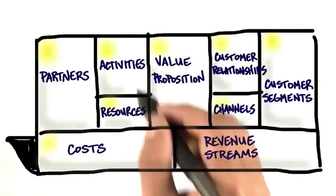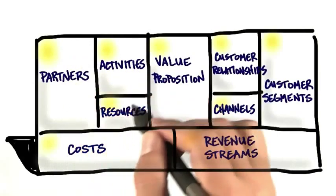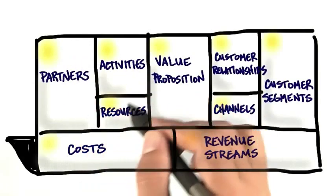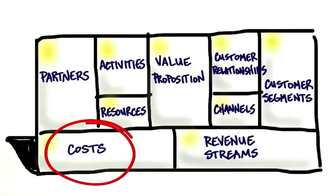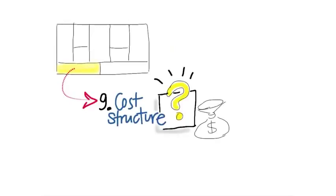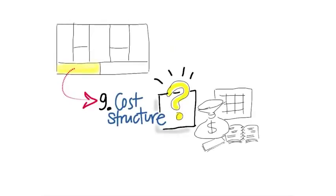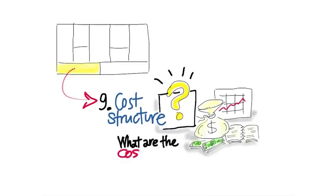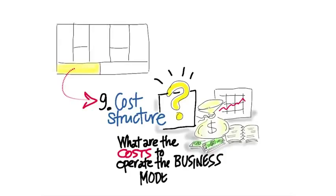And then finally, all this adds up on the left hand side, over here, to cost. What are the costs and expenses to operate the business model? One of the interesting things about cost is it's not just the obvious ones, like people or buildings or materials. What you're really going to be asking are: what are the entire costs to operate our business model?